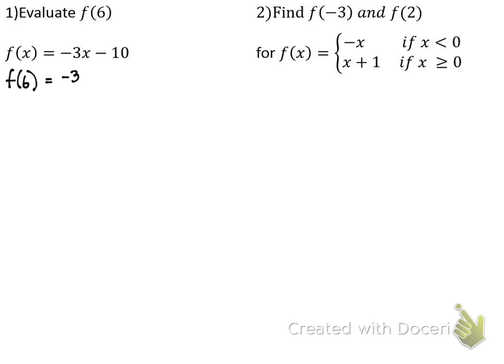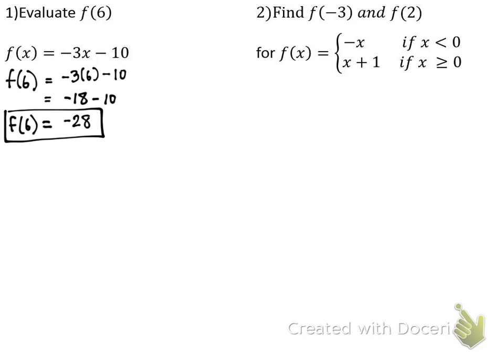So we get negative three times six minus ten. Anywhere we put x, we're going to put in six, and we use PEMDAS to evaluate. Negative three times six is negative 18. Negative 18 minus ten is negative 28. So that means when I put the ingredient of six in, I get an answer of negative 28 — that's the output. We're only using one ingredient here, but I could have picked other ingredients to put into this math machine.